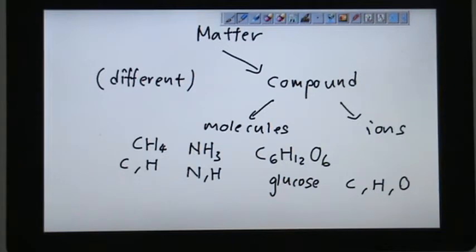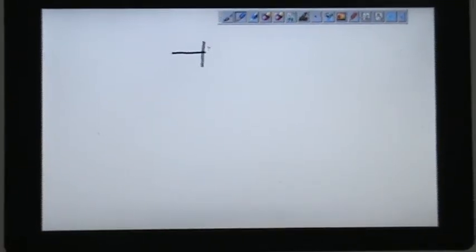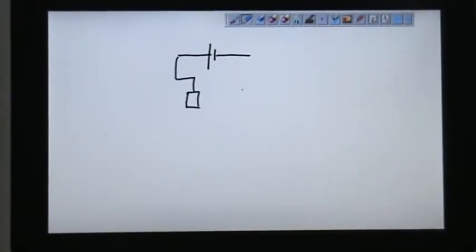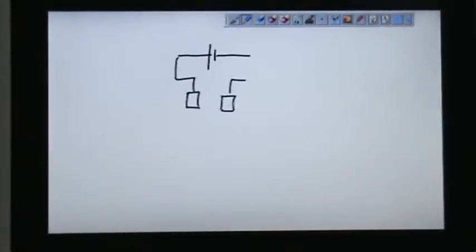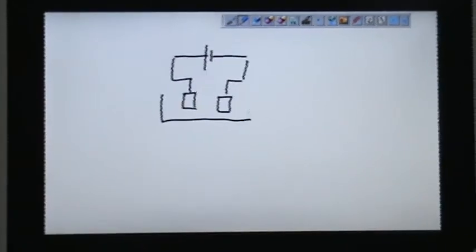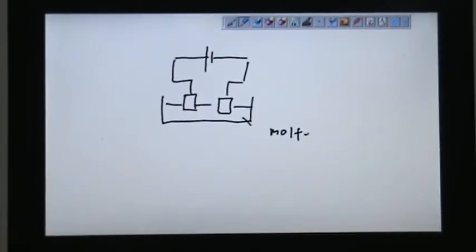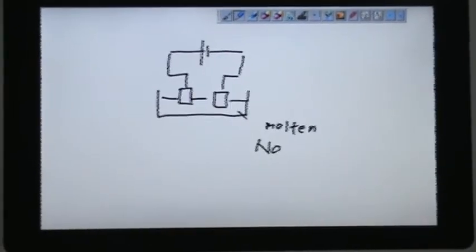One of the characteristics of compound is they can be broken down into simpler substance. I'll give you an example of electrolysis. They use electricity to break the component of NaCl to simpler substance. Here, we have molten NaCl.